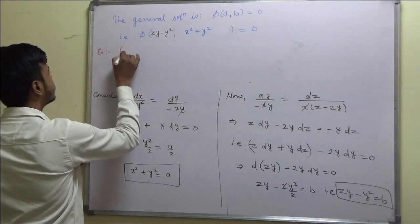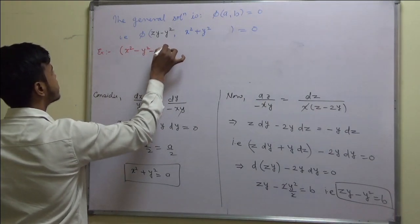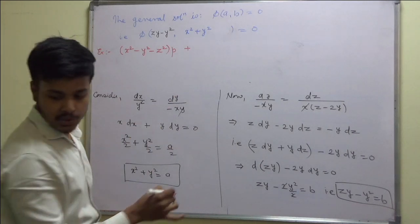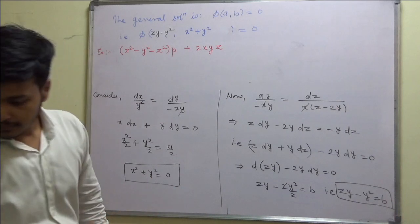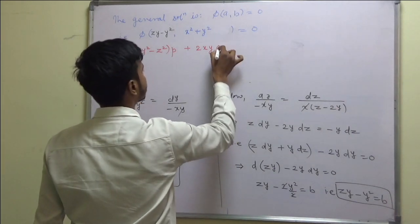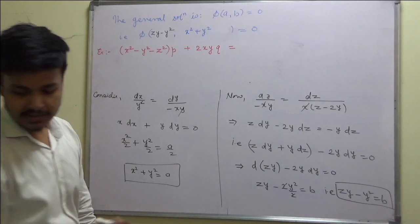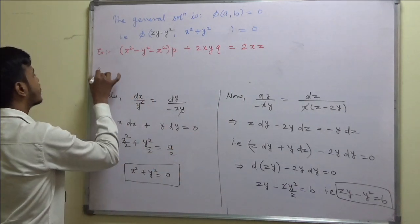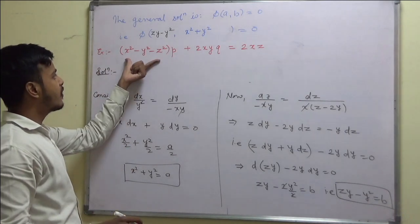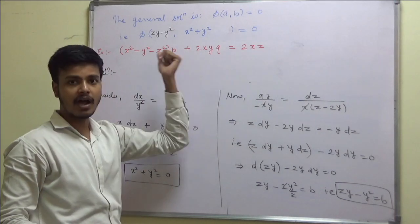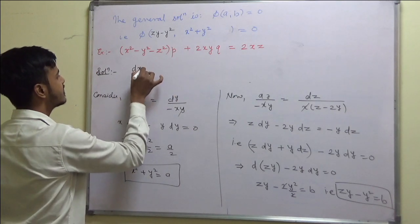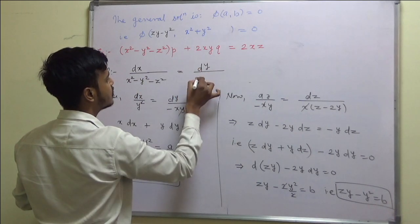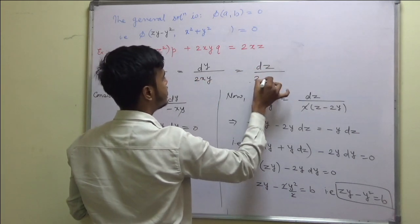Next problem: Solve (x² - y² - z²)p + 2xy·q = 2xz. This is of the form P·p + Q·q = R. The auxiliary equation is dx/(x² - y² - z²) = dy/(2xy) = dz/(2xz).